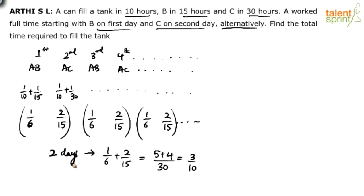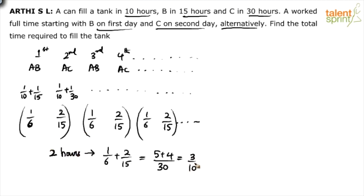Every two days they will do 3/10 of the work. This fraction 3/10 is very important. They can do 3/10 — or 30% — of the work in two hours. Now you need to multiply this fraction, trying to bring it as close as possible to 1.